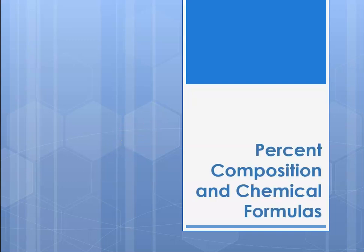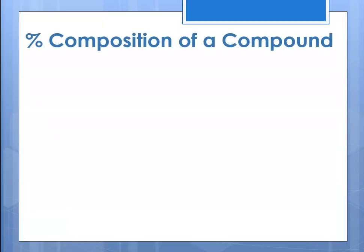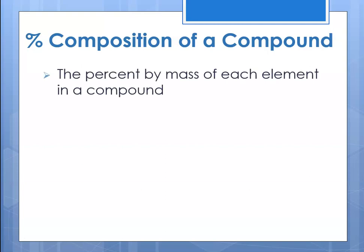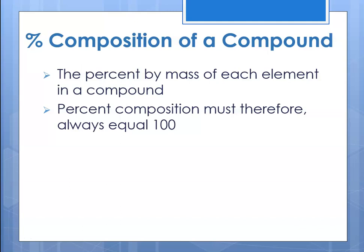Hello, this is Miss Augustine and today we're going to learn how to calculate percent composition and how to use percent composition to calculate chemical formulas. The percent composition of a compound is the percent by mass of each element in that compound, and since percent is based on 100, the percent composition must always equal 100.